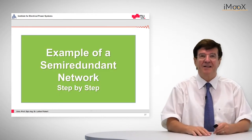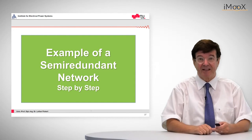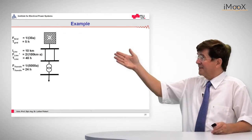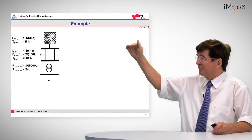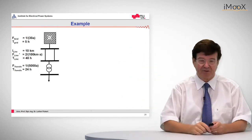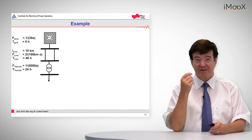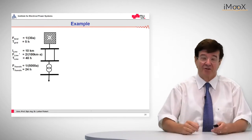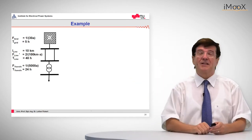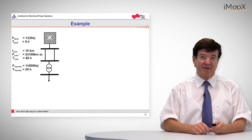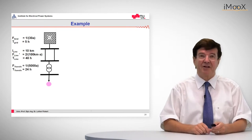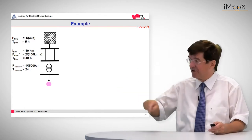Now let's apply this to an example of a semi-redundant network. The network can be seen here: an overlying 110 kV grid with two parallel lines and in series one transformer. It is semi-redundant because we have two lines but non-redundant concerning the transformer. On the left side of each element you can see the average frequency and average outage time. Now we determine the frequency and non-availability at the consumer.